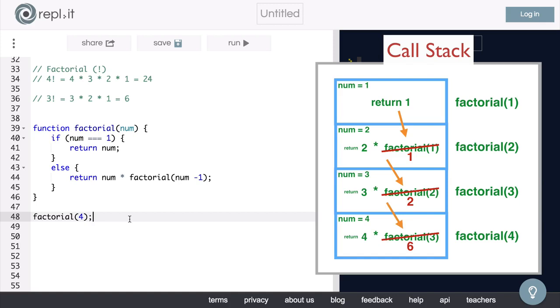And finally, in our initial function, we end up with the expression 4 times 6, which evaluates to 24. So, as you can see, in a recursive function, we keep building up the call stack until our base case is satisfied.